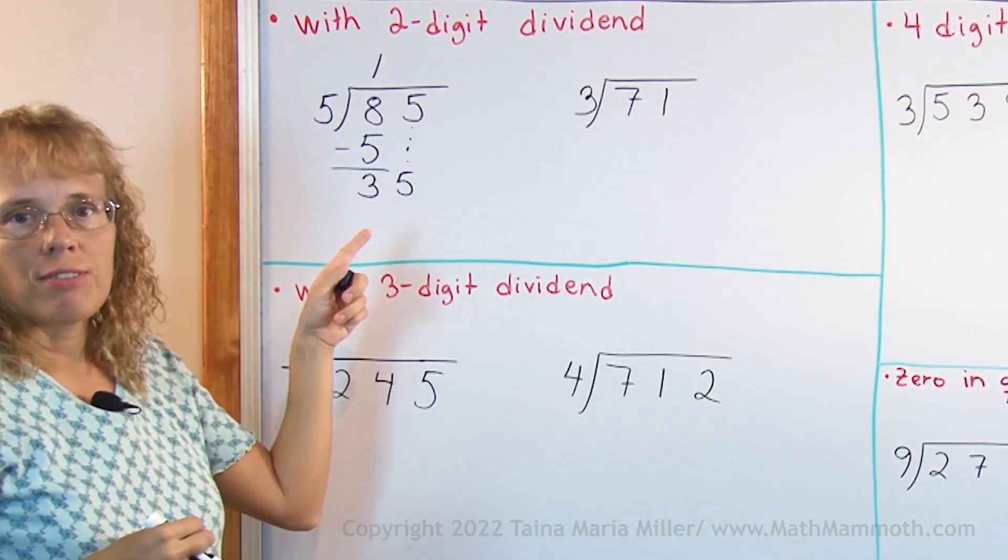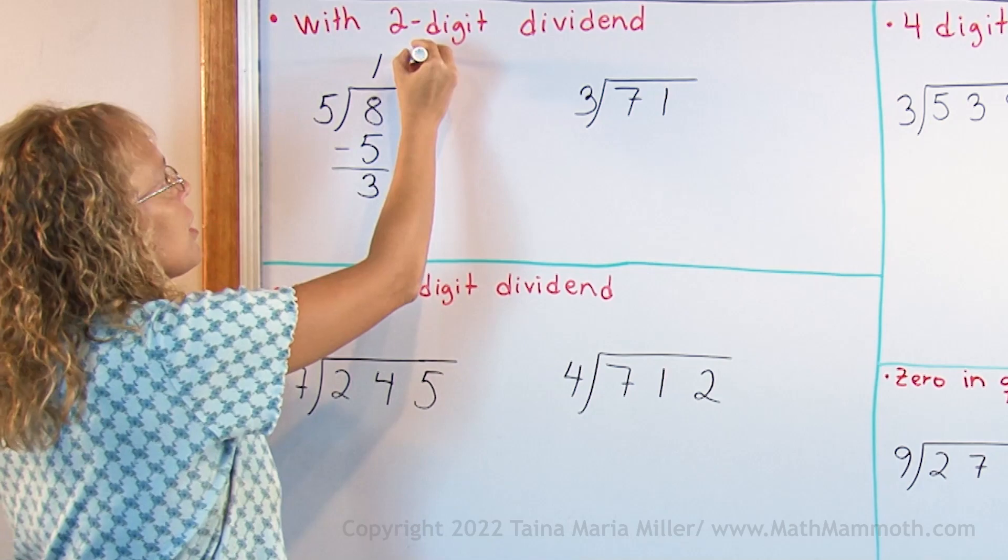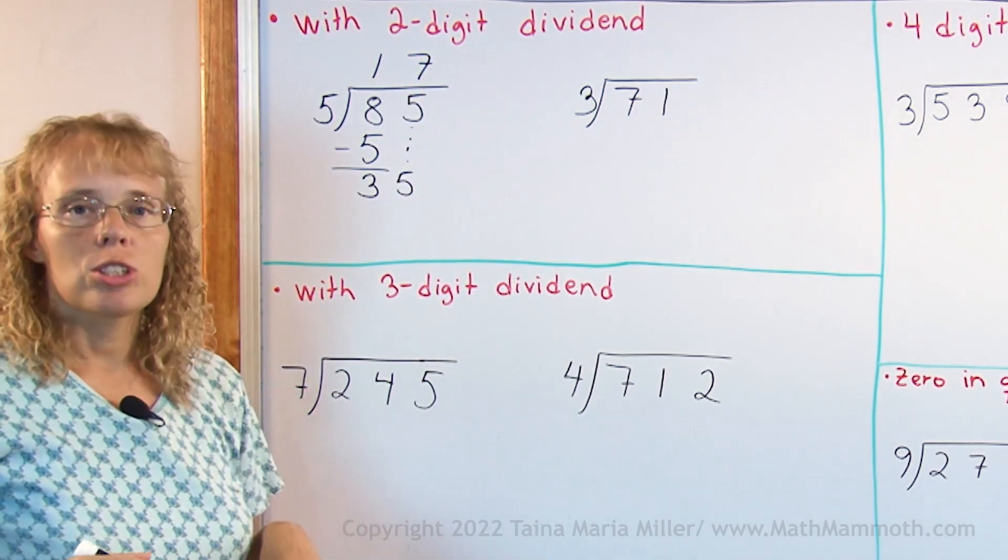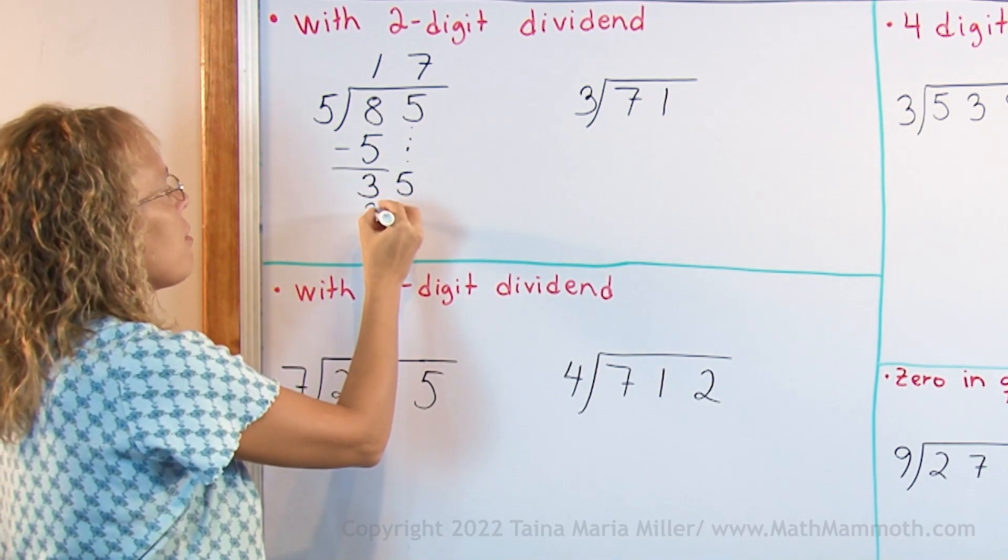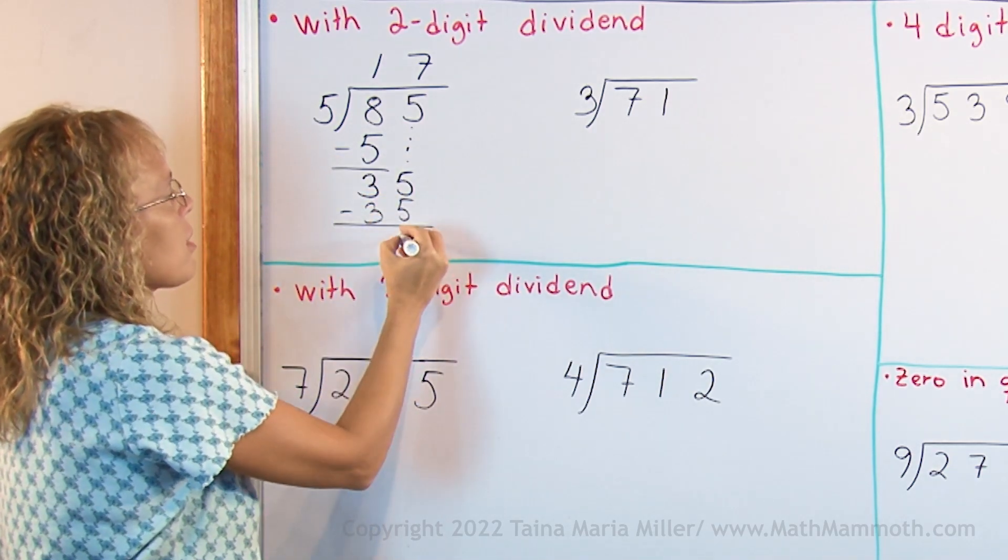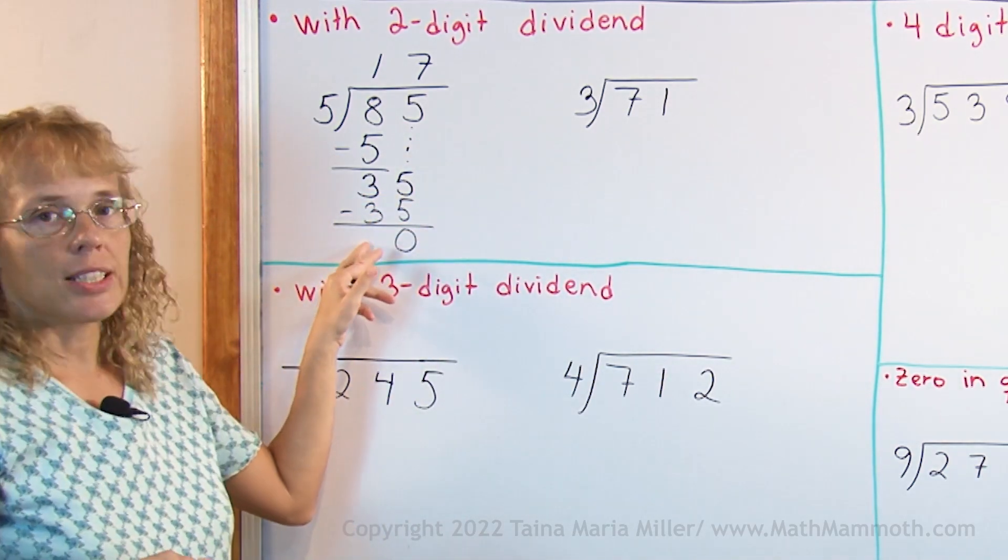Then we divide 5 into 35. 5 goes into 35, 7 times. That's an exact division, so I could stop here. But most people write down 7 times 5 is 35, and subtract to find the final remainder 0.